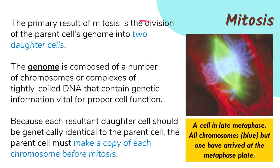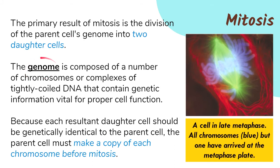To give emphasis, the primary result or product of mitosis is the division of the parent's genome — or parent's genetic material — into two nuclei, which will then be distributed to two daughter cells. We define genome as the number of chromosomes, or tightly coiled DNA, that contain the genetic information of that organism or cell. So the genome is the entire chromosome set of that organism.